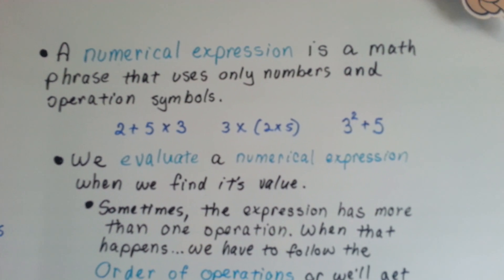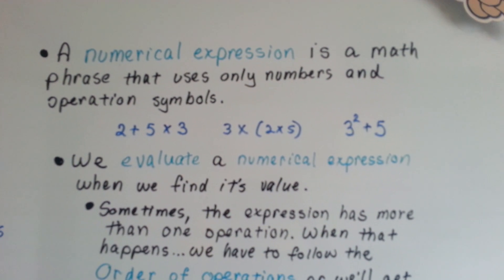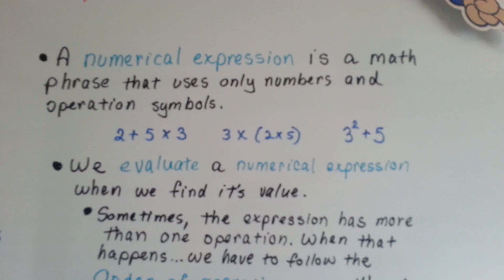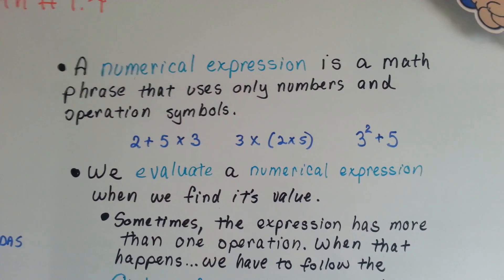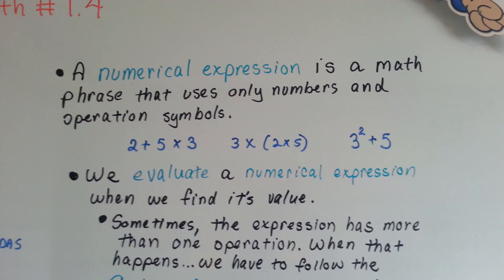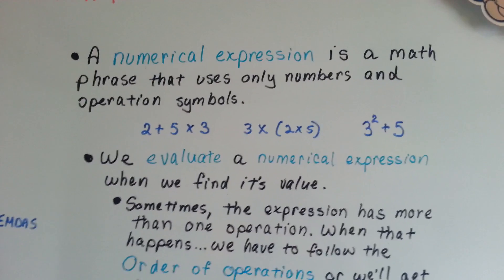Well, we evaluate a numerical expression when we find its value. So to evaluate 3 to the second power plus 5, we'd find out what the answer is. 3 times 3 is 9 plus 5 is 14. So now we just evaluated that one.